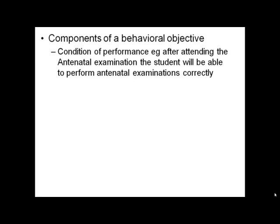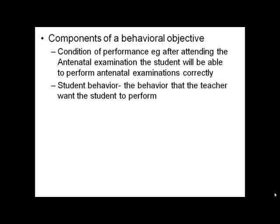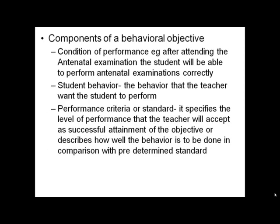Components of a behavioral objective: first is condition of performance — example: after attending the antenatal examination. Second is student behavior — the behavior the teacher wants the student to perform. Third is performance criteria or standard — it specifies the level of performance the teacher will accept as successful attainment of the objective, or describes how well the behavior is to be done in comparison with a predetermined standard.